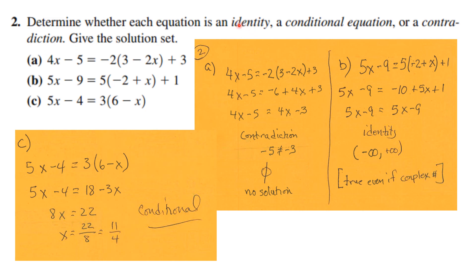On number two, you determine whether each equation is an identity, conditional equation, or contradiction. In part a, we distribute the minus 2, noting that minus times minus is plus, then work to get variables on one side and numbers on the other. We have 4x on both sides. We're asking if 4x minus 5 equals 4x minus 3. That's called a contradiction, meaning there is no solution, and this is the symbol for the null set.